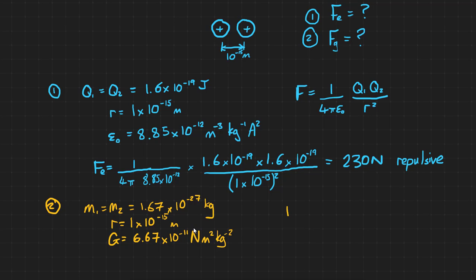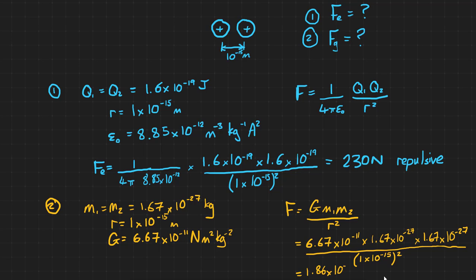So we can substitute those into our equation F = GM₁M₂/r². And this gives us a value of 1.86 × 10⁻³⁴ newtons. And the gravitational force is always attractive.